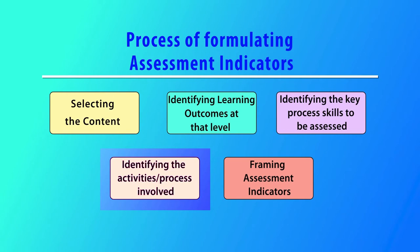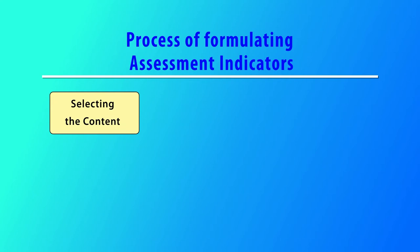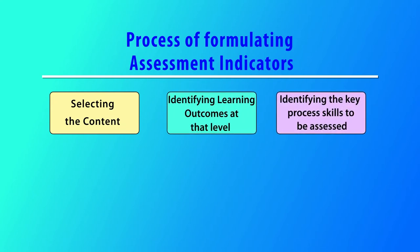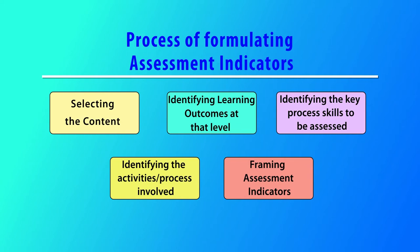The next step is to identify what activities and processes are involved in the development of that process skill. For example, communication is a process skill. What activity are you organizing to develop communication as a process skill? What practical or theoretical content are you going to use to develop this particular process skill? Then, how will this activity help in assessing achievement of that process skill — that is called framing assessment indicators. So it is a long process. It starts with selection of the content, then moves towards identification of learning outcomes and key process skills, then identifying activities, and finally framing assessment indicators.